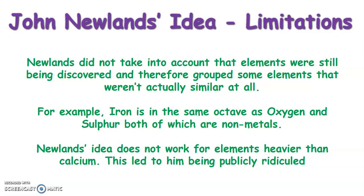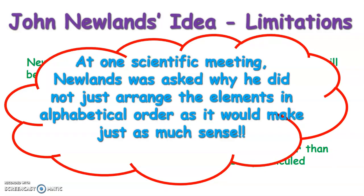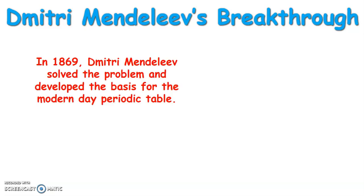Newlands was probably unfairly ridiculed for his table — he was operating on very limited information and trying to do something very difficult. He was even asked why he didn't just arrange them alphabetically, since it would make just as much sense. However, we did build on his ideas, and Dmitri Mendeleev was the person who got us to where we are now, by solving several of the problems with Newlands' periodic table.